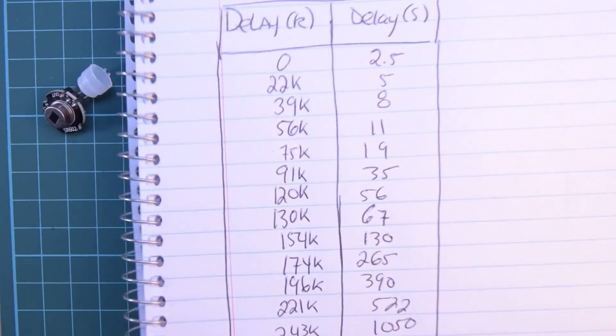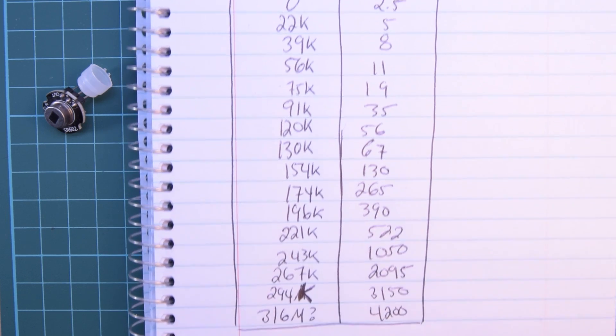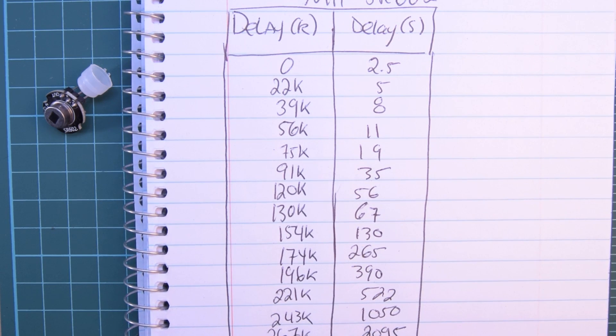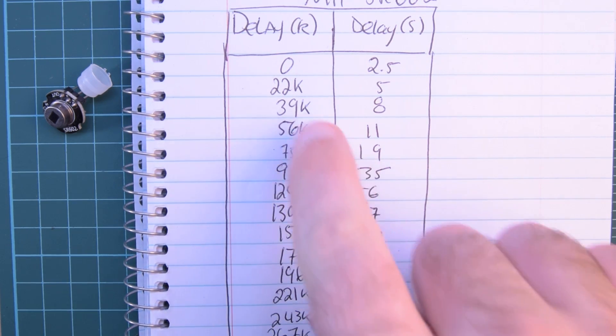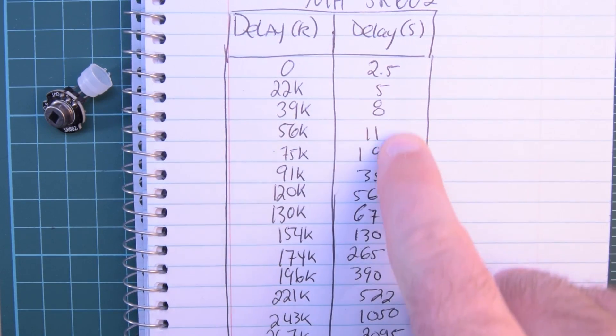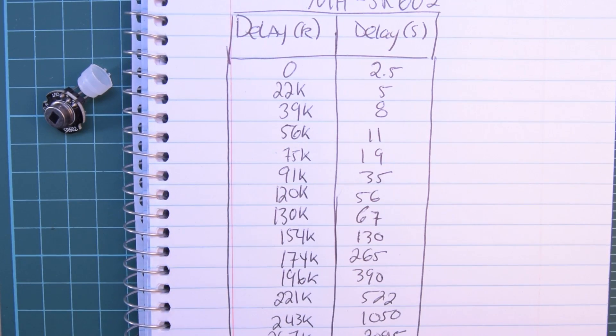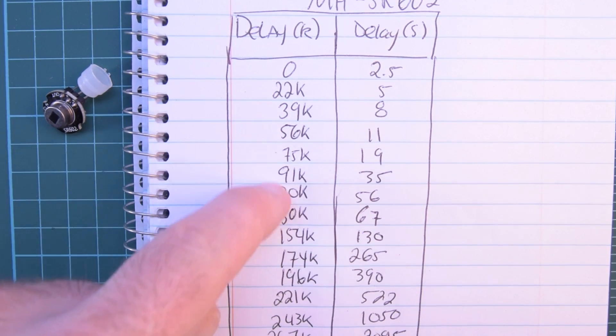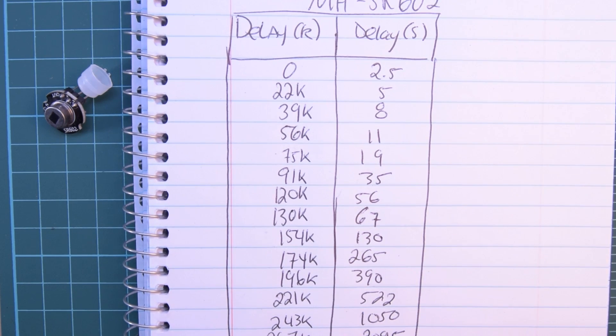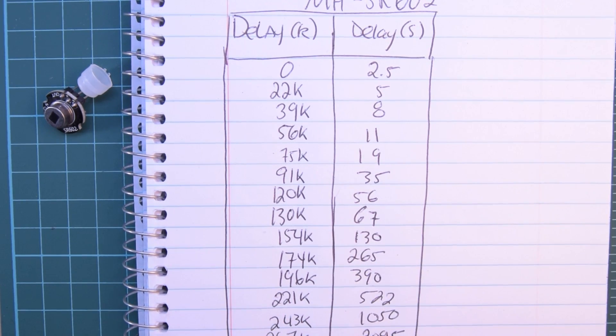And this here is the little chart that they give you. So, you might need to pause to take a look. But you've got your resistor here that you'll set up. It'll give you an approximate delay like this. So, the 0 ohm resistor will give you 2.5 seconds delay. And the higher the resistor value, the more delay you're going to get. I don't know if it's just charging a capacitor or something like that.